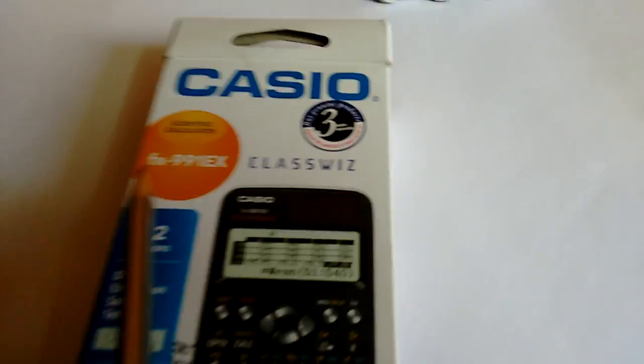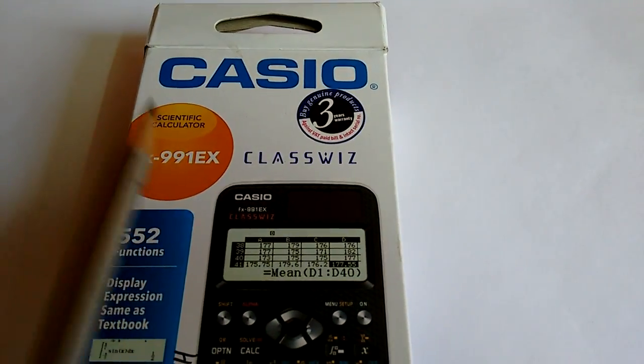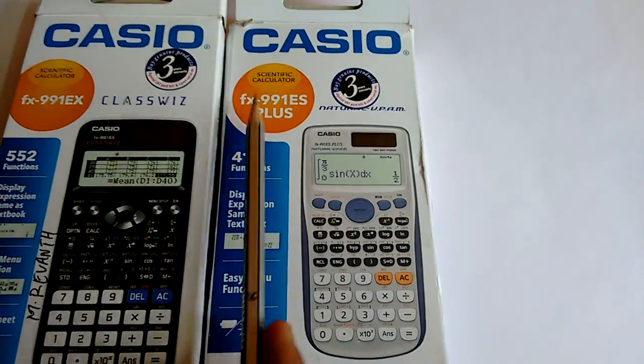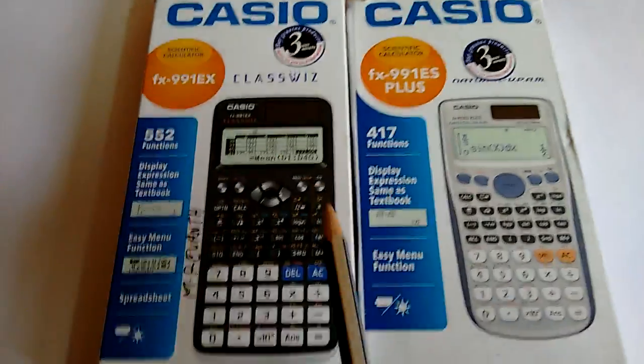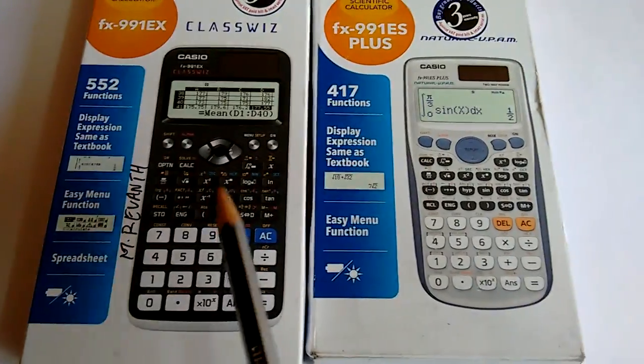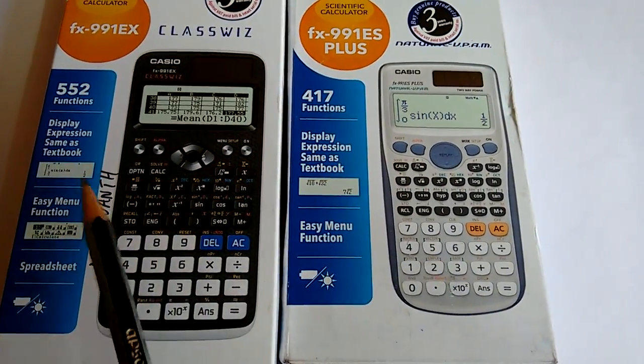Hello YouTube, this is a comparison video on two scientific calculators. The first one is Casio FX991EX and the second one is Casio FX991ES Plus. As you can see in the pictures, the calculators vary a lot.